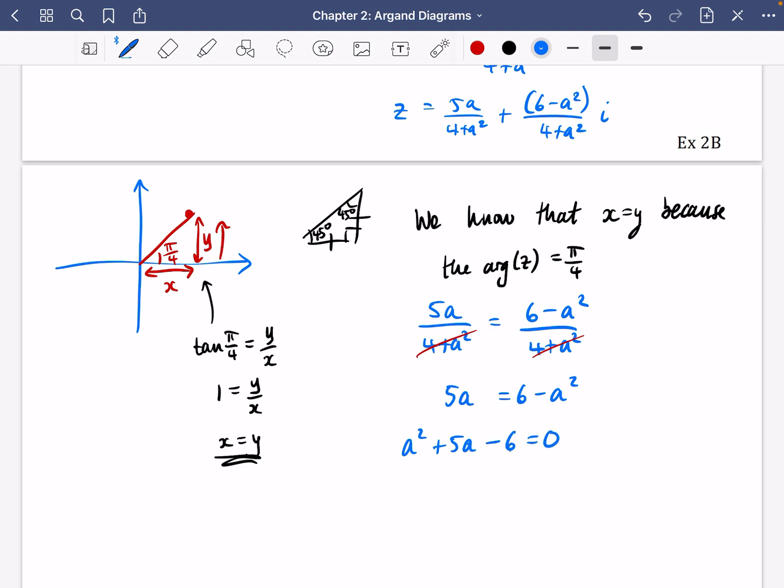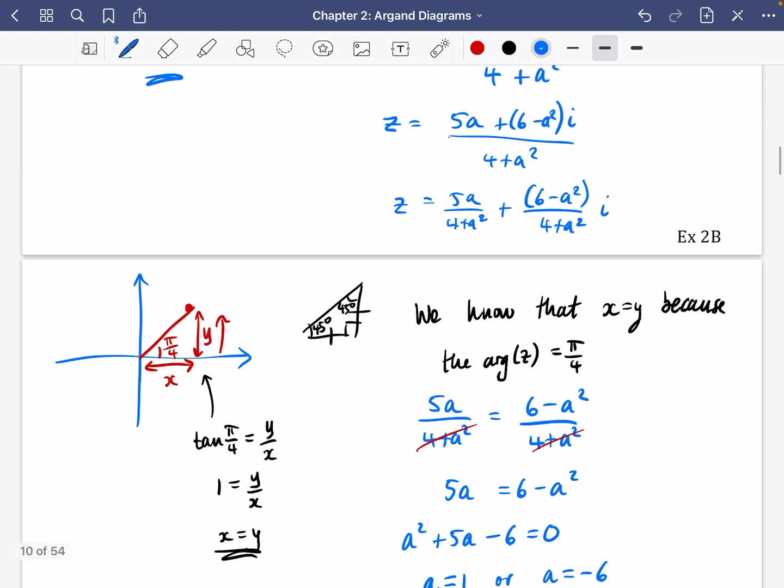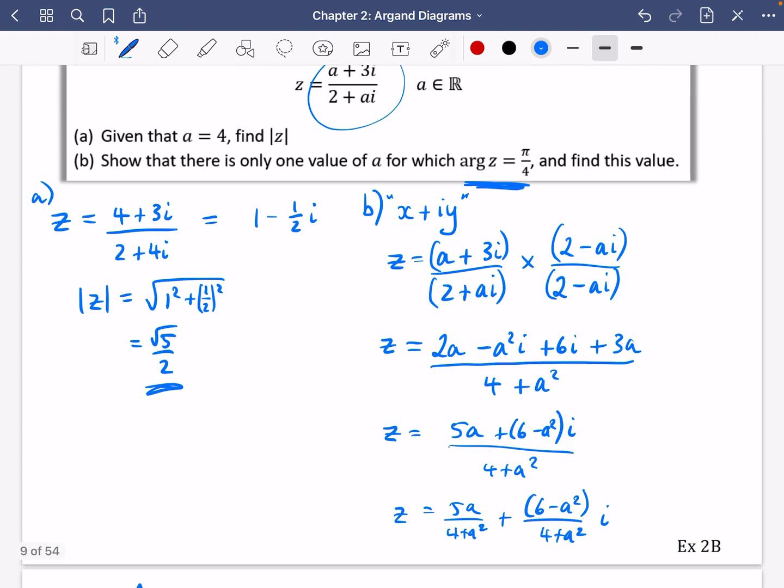Now you've all got quadratic solvers on your calculator. I'm not going to need to show you that bit here, but I'm going to go to my quadratic solver and I'm going to put in the coefficients as 1, 5 and minus 6. And my solutions to this are a equals 1 or a equals minus 6. That's a bit odd though, because it said show that there is only one value of a, which makes this true and find this value.